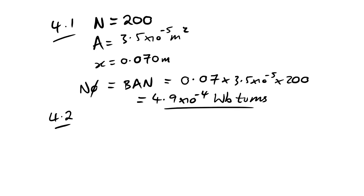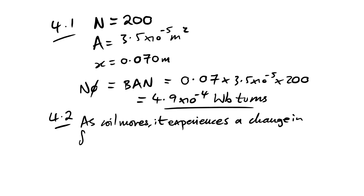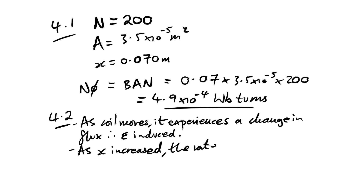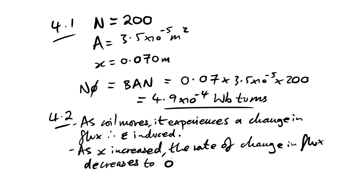Question 4.2: the search coil is now moved at constant speed along the axis — x is increasing — and an EMF is induced. Explain what happens to the EMF as the coil moves. As the coil moves, it experiences a change in flux linkage, so an EMF is induced. As x increases, the rate of change of flux decreases toward zero — and therefore so does the induced EMF.